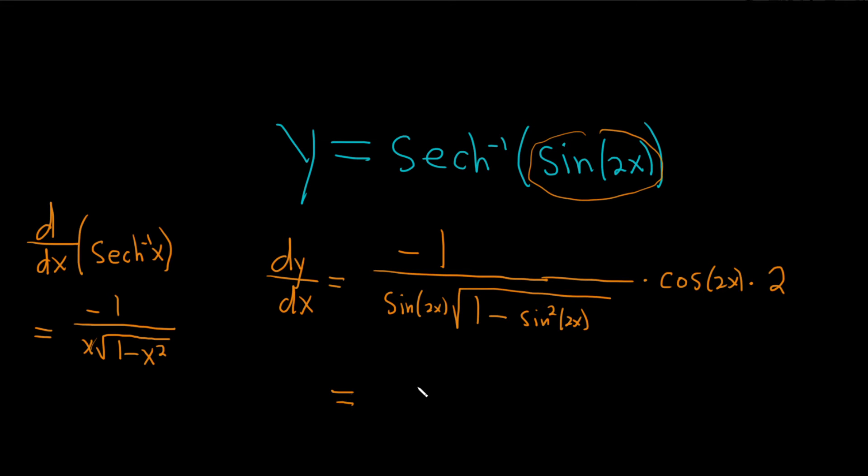So this is equal to, let's see, negative, so I'm going to put this upstairs, so negative 2 cosine 2x over, here we have sine 2x. 1 minus sine squared is cosine squared, so this is the square root of cosine squared of 2x.